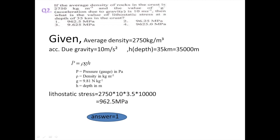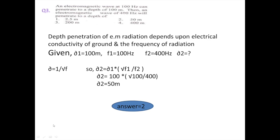The answer is mega Pascal because when you calculate, there are six zeros at the end, so we convert from Pascal to mega Pascal. The right answer is option 1. The third question is: an electromagnetic wave at 100 Hertz can penetrate to a depth of 100 meters. Then an electromagnetic wave of 400 Hertz will penetrate to what depth? Suppose there are two waves — one at 100 Hertz and one at 400 Hertz.